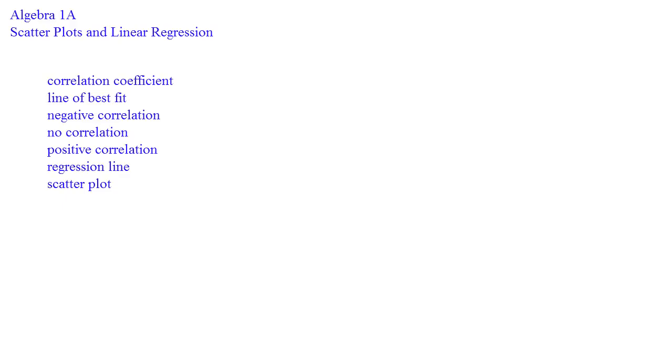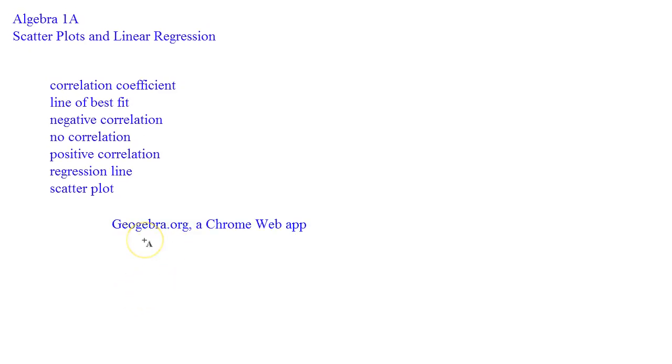So without further ado, let's go to geogebra.org. Geogebra.org is a Chrome web app that helps you actually graph and do everything that you need to do for working with scatter plots. Before we get there just yet, we're going to talk about each one of these definitions.